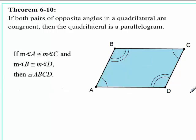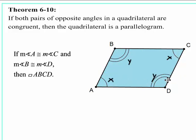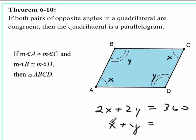Theorem 6-10 is very similar — if the opposite angles are congruent, then it's a parallelogram. Starting with a quadrilateral: if this is X and this is X, and this is Y and this is Y, clearly X + X + Y + Y adds up to 360 degrees, because that's the sum of interior angles of a quadrilateral. That gives 2X + 2Y = 360, divided by 2: X + Y = 180 degrees. That meets Theorem 6-9, so it's a parallelogram.